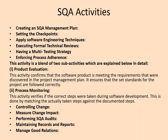There are two key sub-activities. Product evaluation confirms that the software product is meeting the requirements discovered in the project management plan and ensures that the set standards for the project are followed correctly. Process monitoring verifies if the correct steps were taken during software development by matching actual steps against documented steps. Other activities include controlling change, measuring the impact caused by change, conducting SQA audits, maintaining records and reports, and managing good relations.